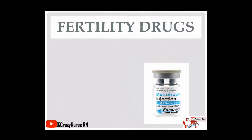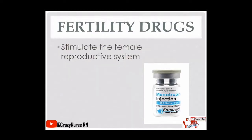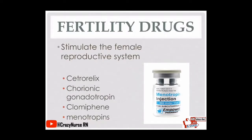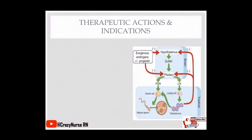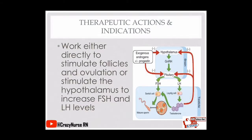Now let's proceed to the third drug classification: fertility drugs. These stimulate the female reproductive system. Examples are cetrorelix, chorionic gonadotropin, gonadotropin, clomiphene, and menotropins. They work either directly to stimulate follicles and ovulation or stimulate the hypothalamus to increase FSH and LH levels. Essentially, fertility drugs stimulate ovulation — that is their main function.